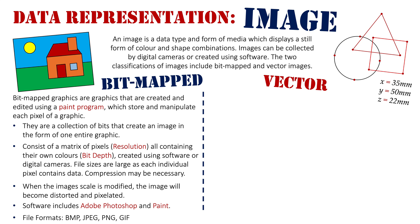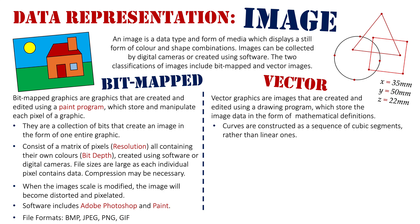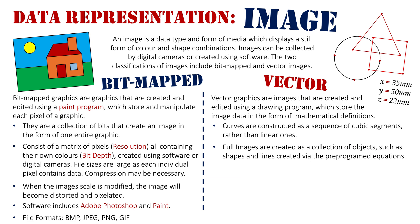We will move on now to vector. Vector images are created and edited using what's known as drawing programs, which store the image data in the form of mathematical definitions. Curves are constructed as a sequence of cubic segments rather than linear ones — so they're all created mathematically, the angles they're going at. You can actually draw lines by entering in values which relate to a line's length, shape, direction, and angle. Full images are created as a collection of objects such as shapes and lines created via pre-programmed equations.